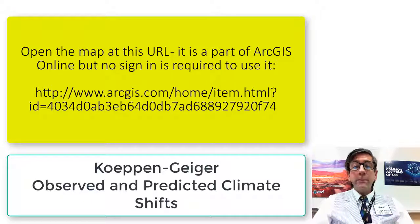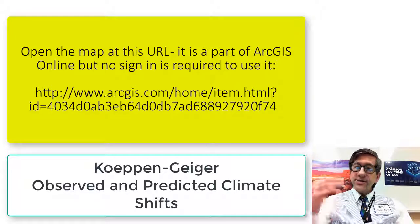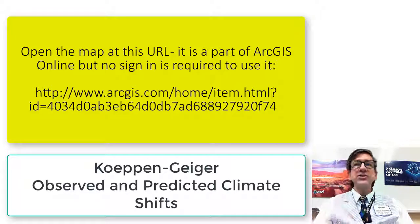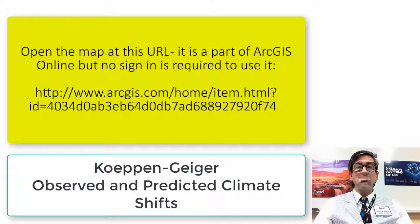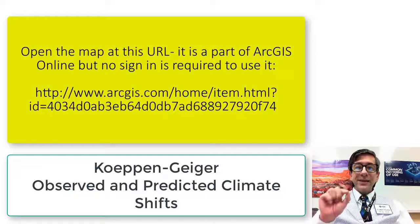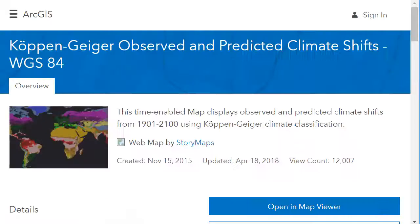Go ahead and open that map in ArcGIS Online, and skim the metadata. We always want to pay attention to the metadata: where did it come from, who created it, why it was created, what scale was it created at, and so on. It gives, in part, the following information.